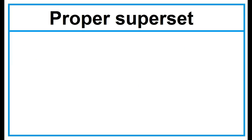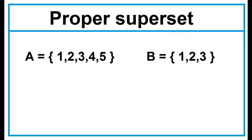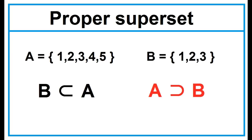Proper Superset — Set A is a proper superset of Set B if Set A is a superset of Set B and Set A is not equal to Set B. Given Set A and Set B: while Set B is a proper subset of Set A, Set A is a proper superset of Set B.